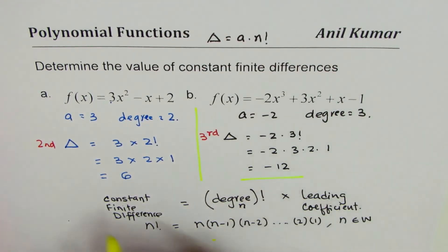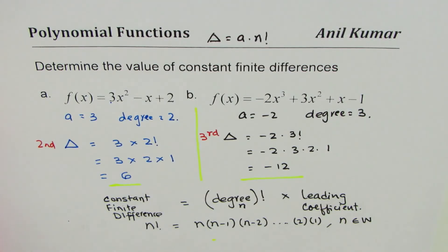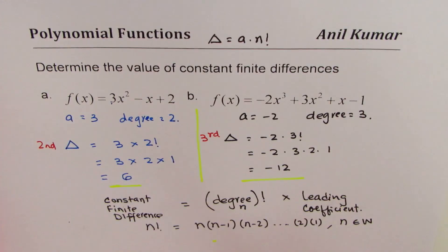With the help of this formula you can very easily calculate the constant finite difference for any polynomial. The constant finite difference is the product of the leading coefficient and the factorial of its degree, n factorial. I hope that helps — I'm Anil Kumar. Feel free to share, subscribe, and post questions. Thank you and all the best.